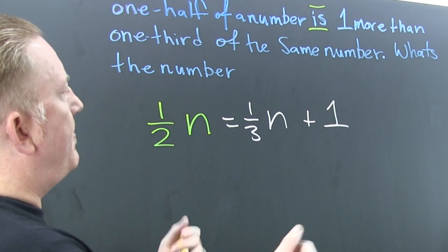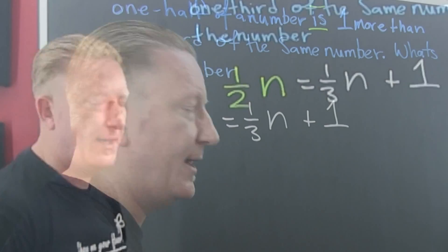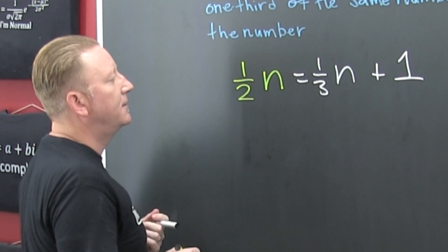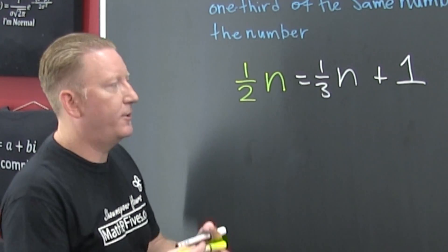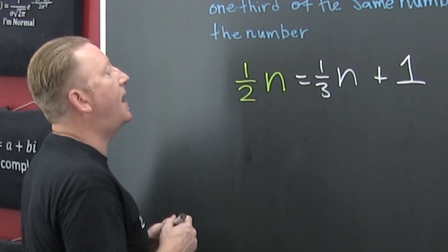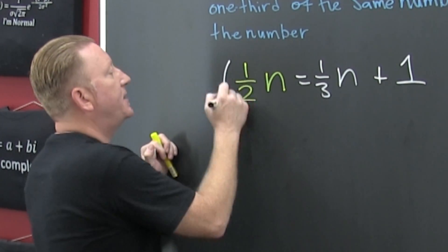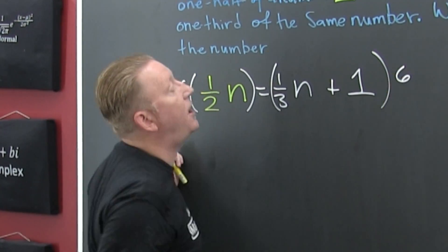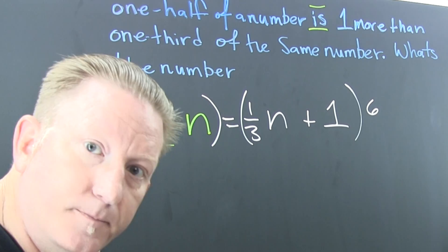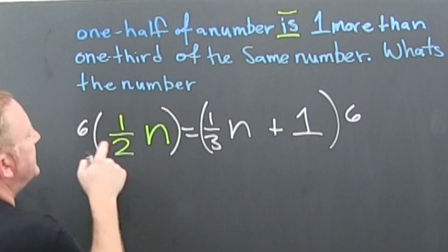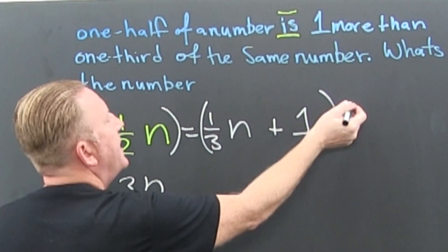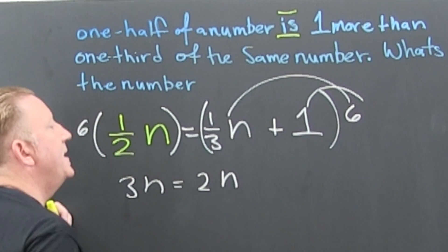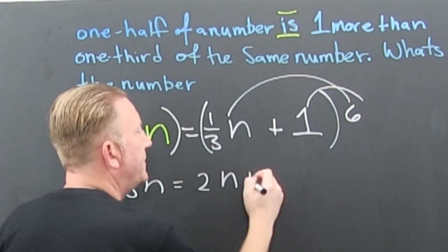Now what can I do? I can back that math up or I can clear the fractions — either way, either works, it's all good. Let's clear the fractions so that I don't have to worry about that. I multiply both sides by the common denominator. The common denominator of all the denominators? I see 6! So 6 divided by 2 is 3, and 6 over 3 is 2, and 6 times 1 is 6.